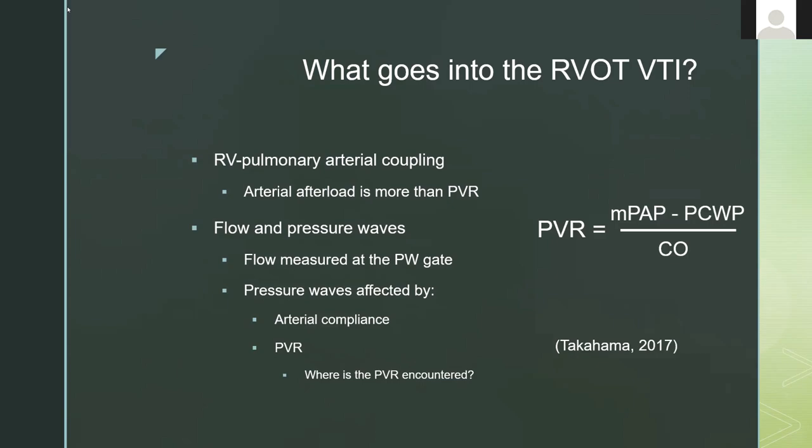The other thing is that since the waves are going so slowly, most of them actually come back to the right ventricular outflow tract after systole is over. So there's very little impedance to ejection for the right ventricle under normal circumstances.